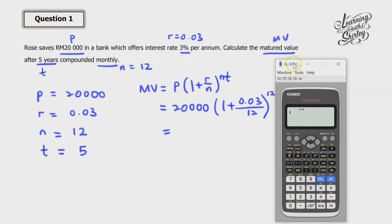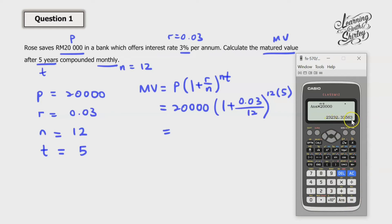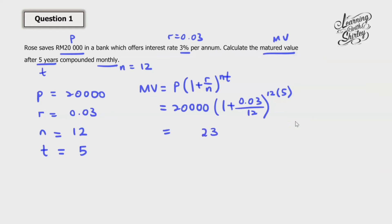Let's calculate this using the calculator. We calculate 0.03 divided by 12 first, then plus 1, then to the power of 60 (since 12 times 5 is 60), then multiply with 20,000. So we get 23,232.34 RM. And this is the answer.